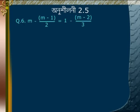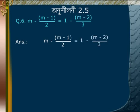Problem 6: Solve M minus (M minus 1)/2 is equal to 1 minus (M minus 2)/3. Expanding brackets: M minus M/2 plus 1/2 is equal to 1 minus M/3 plus 2/3.